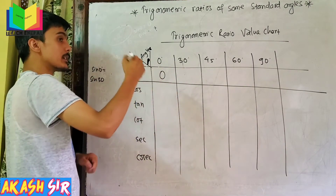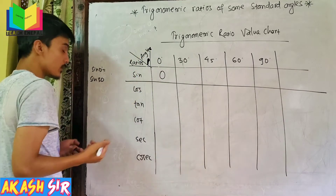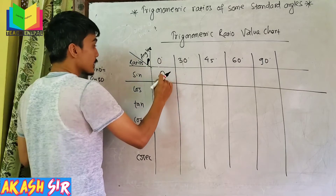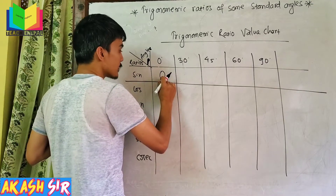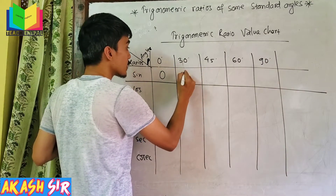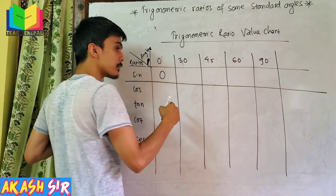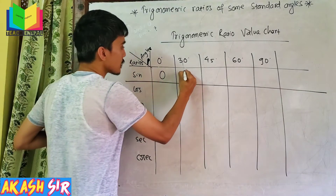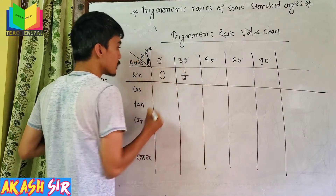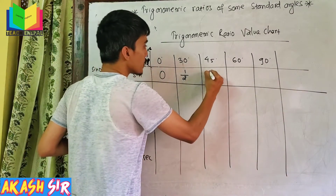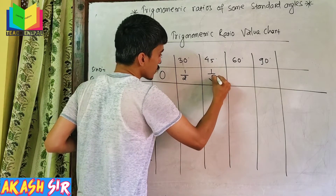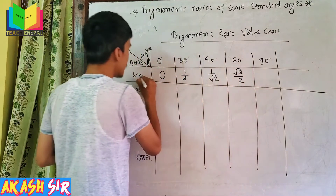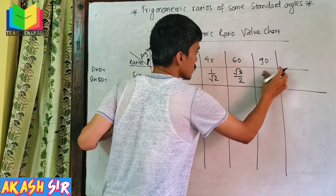The value of sin 0 is 0. We will start with sin 30. Sin 30 degree is 1 by 2. Sin 45 is 1 by root 2. Sin 60 is root 3 by 2. Sin 90 is 1.